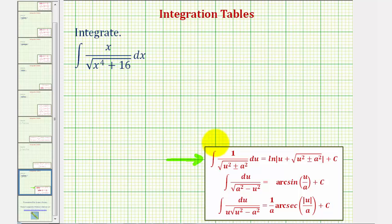Notice here, u squared would equal x to the fourth and a squared would equal 16. Well, if u squared equals x to the fourth, that means u equals x squared. And if a squared equals 16, that means a equals four.